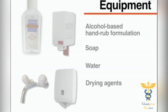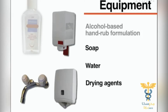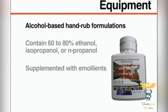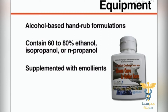To perform adequate hand hygiene, you will need an alcohol-based hand rub formulation or soap, water, and drying agents such as disposable paper or cloth towels. Use alcohol-based hand rubs with proven antimicrobial efficacy. These usually contain 60–80% ethanol, isopropanol, or n-propanol, or a combination of these products.